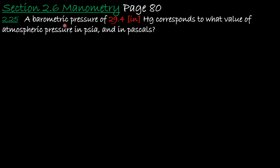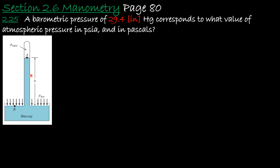Next is problem 2.25. It tells us a barometric pressure of 29.4 inches of mercury corresponds to what value of atmospheric pressure in PSIA — where A stands for absolute — and in Pascals. This is a barometer device. The measurement of atmospheric pressure is usually accomplished with a mercury barometer, which in its simplest form consists of a glass tube closed at one end with the open end immersed in a container of mercury.